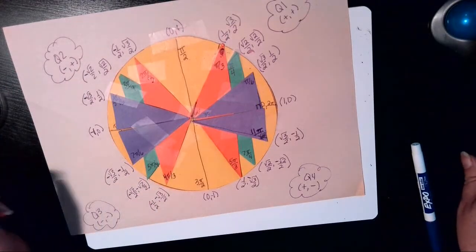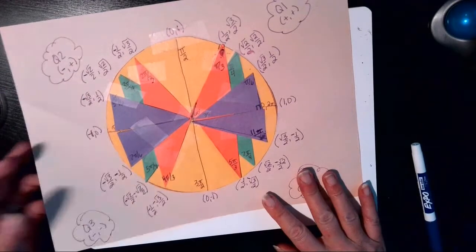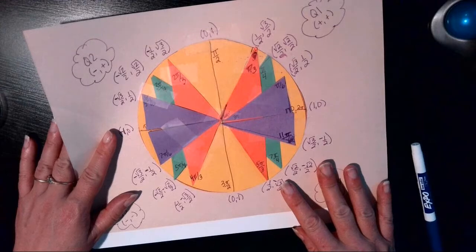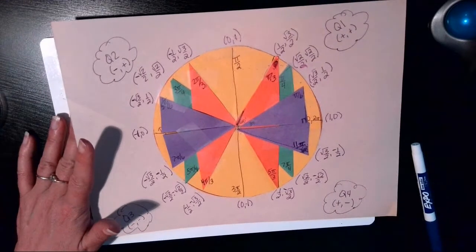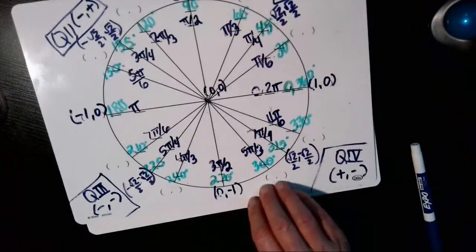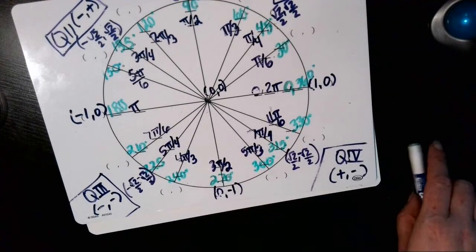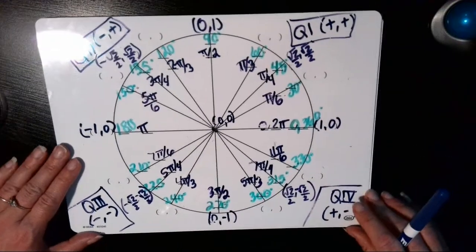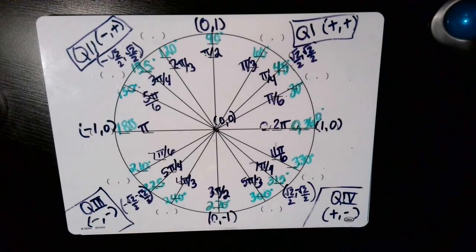And that is how you derive all of your coordinates for the special angles on the unit circle. So the last thing I want to show you before I show you the trig functions on this circle, we'll go ahead and fill them in on this template that we've been keeping track of as we go.